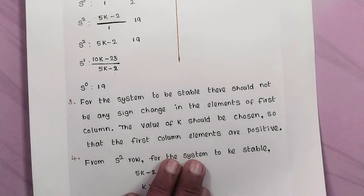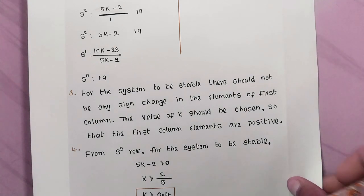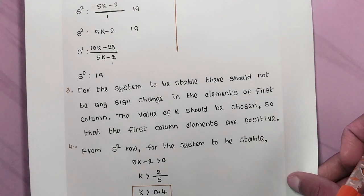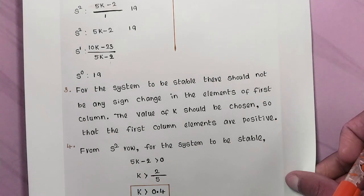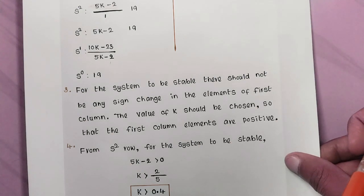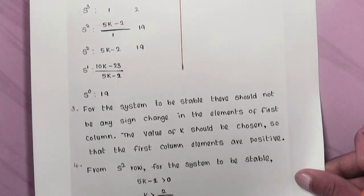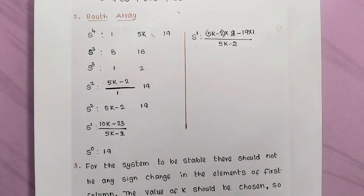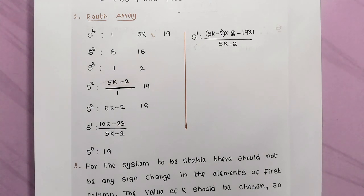Third step: investigating the stability of the system. For the system to be stable, there should be no sign change in the elements of the first column of the Routh array. The value of k must be chosen so that all first column elements are positive. The s⁴ row first element is 1, the s³ row first element is 1, and the s⁰ element is 19 — all positive. So we need the s² and s¹ first elements to also be positive.